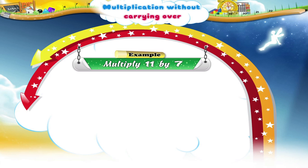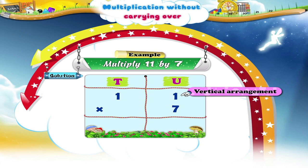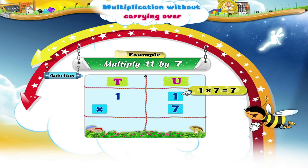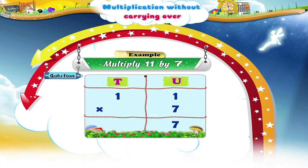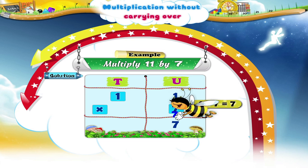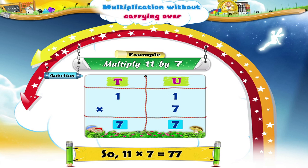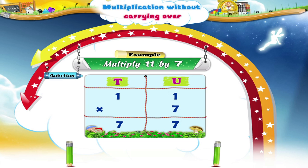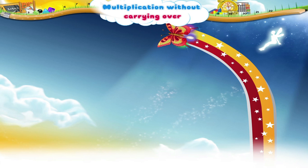Multiply 11 by 7. 1 seven is 7. 1 seven is 7. The product is 77.